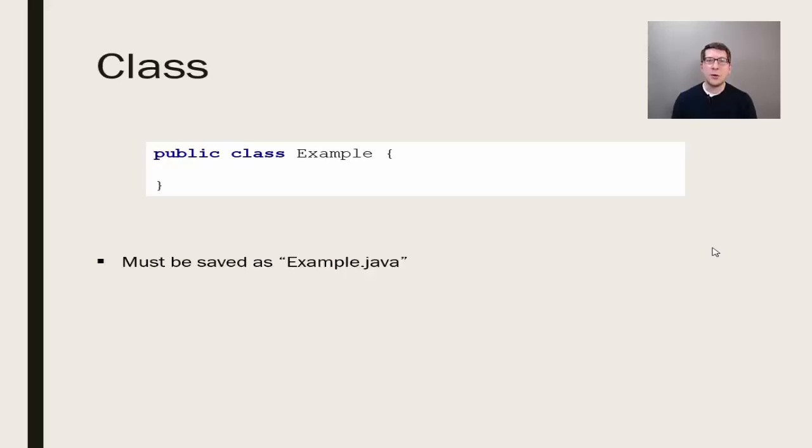Each Java file consists of a single class, and the file you save must have the same name as the class. The format for classes is to declare public, use the class keyword, type a name for the class, and then a set of braces which signify the body of the class.